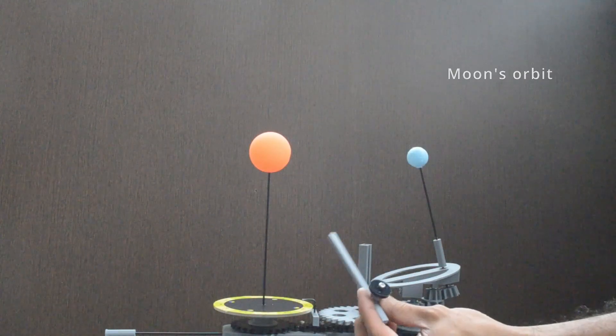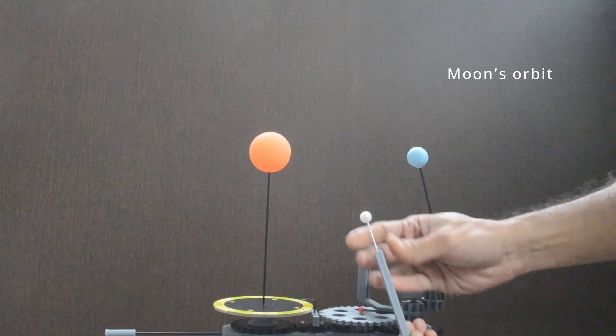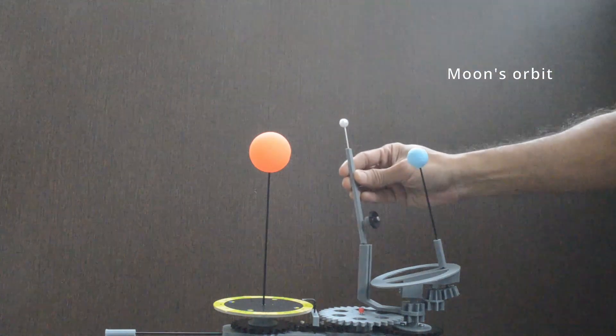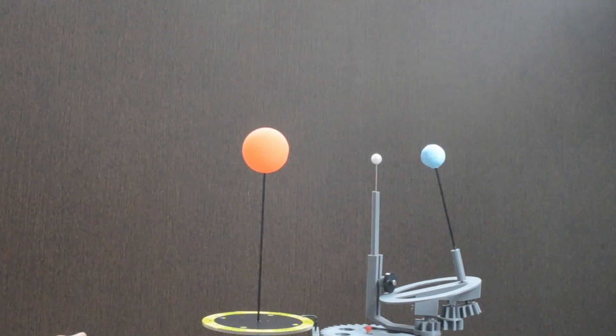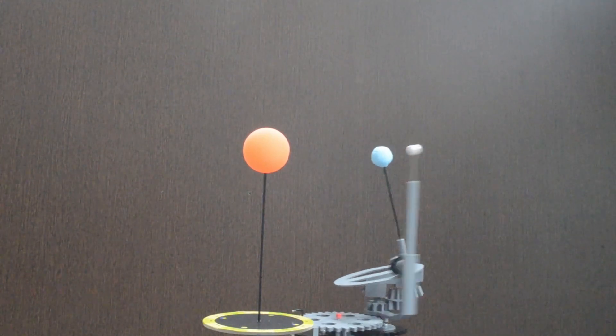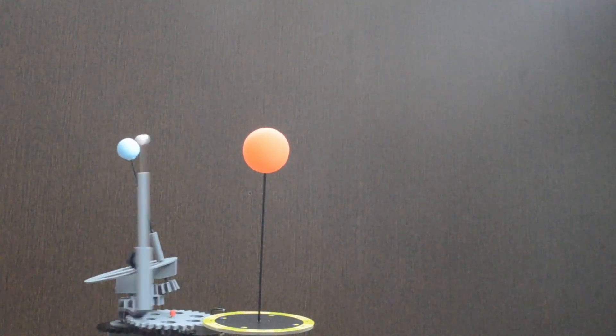Let us place the Moon. Orbital plane of the Moon is at an angle of 5 degrees to the orbital plane of Earth and Sun. In the model, it is 15 degrees instead of 5 degrees.